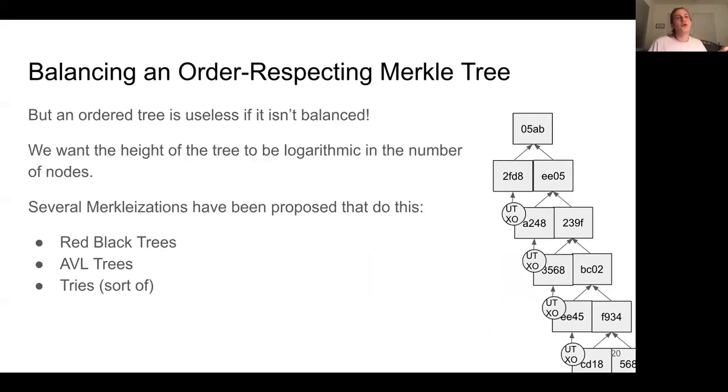So we want an ordered tree, but importantly, an ordered tree is useless if it isn't balanced. We want the height of the tree to be approximately logarithmic in the number of nodes so that the worst case is that the proof size per value proved is still logarithmic in the state size as it was for utreexo. This or something like it can be achieved using Merklizations of well-known data structures like red-black trees and tries, which is what we'll look at.